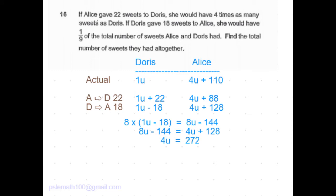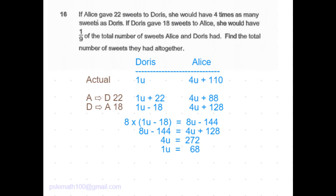From there we get the value of 4u to be equal to 128 plus 144, which is 272. We get the value of 1u to be equal to 68.